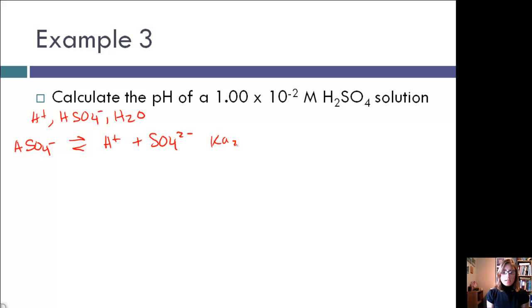We know that our Ka2 is equal to 1.2 times 10 to the negative 2. For HSO4, according to our ICE table, we now have 0.01 molar. Same with the H+, since H2SO4 is our strong acid.